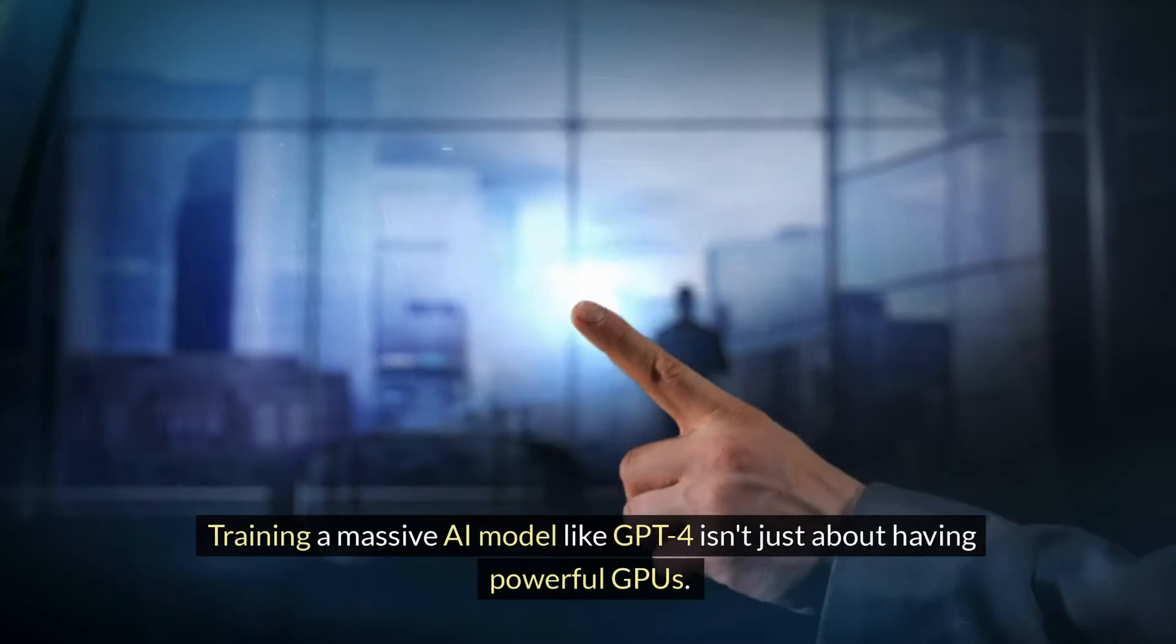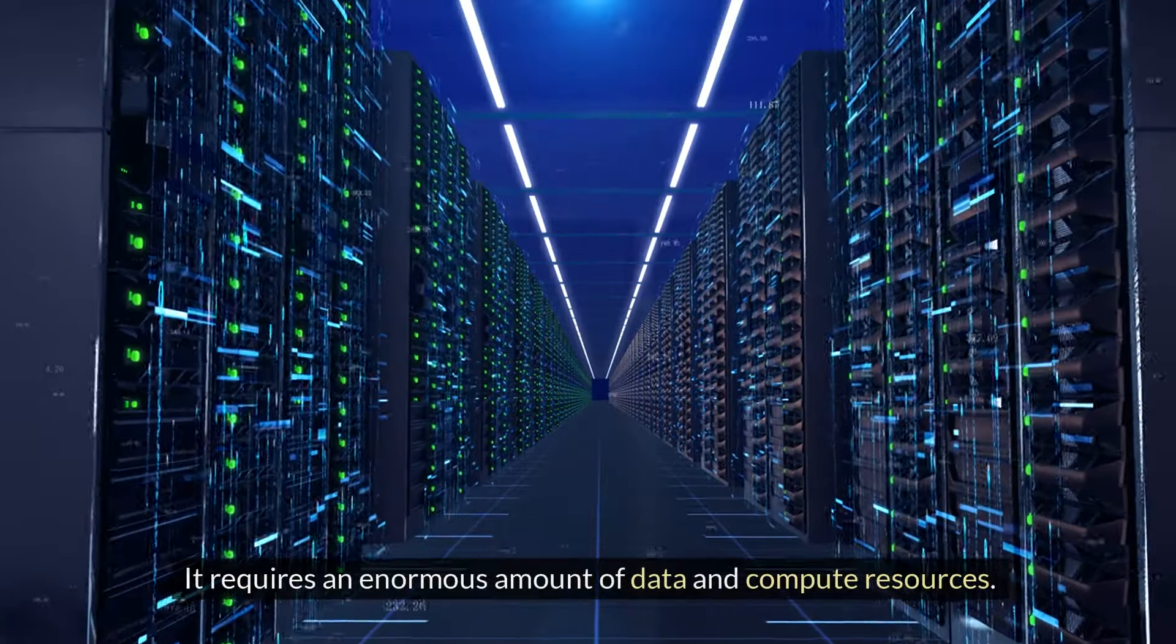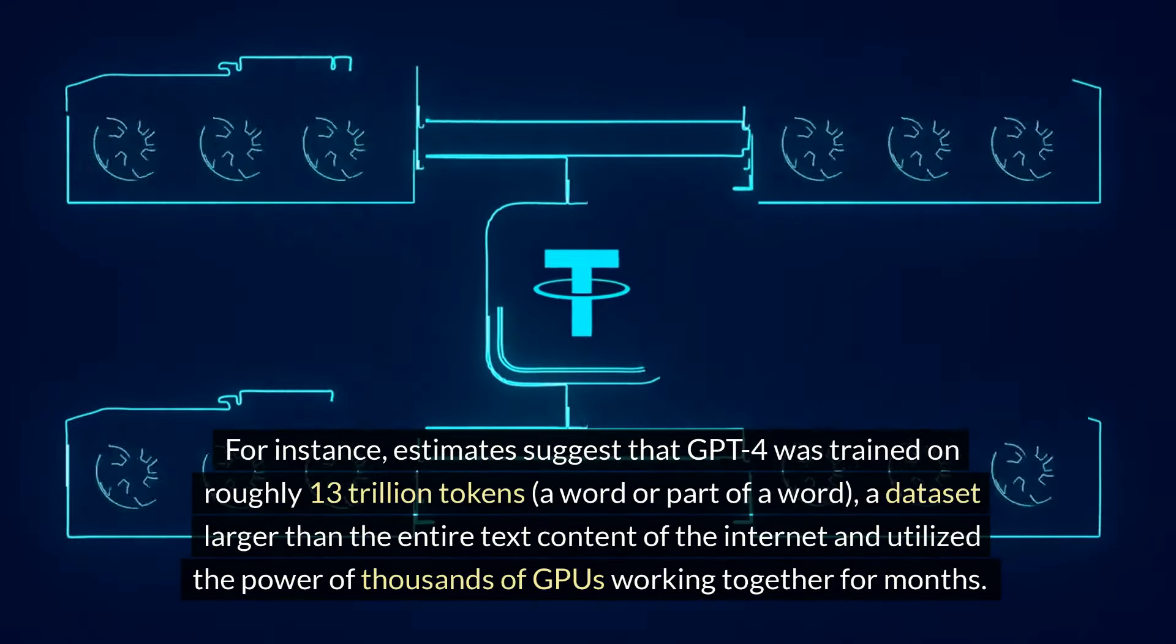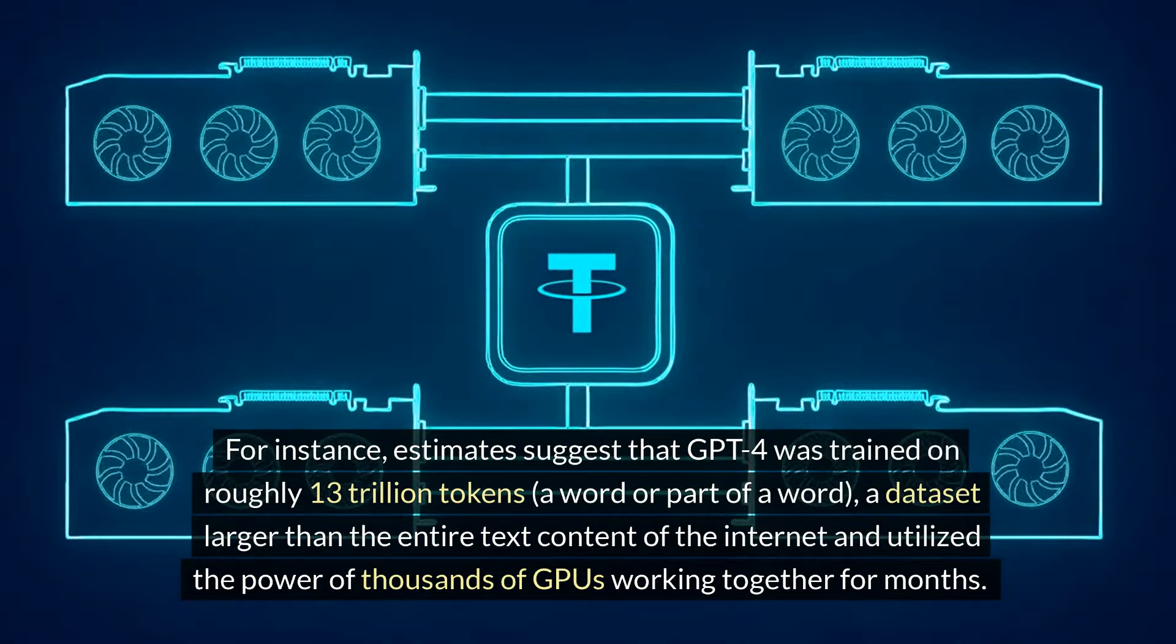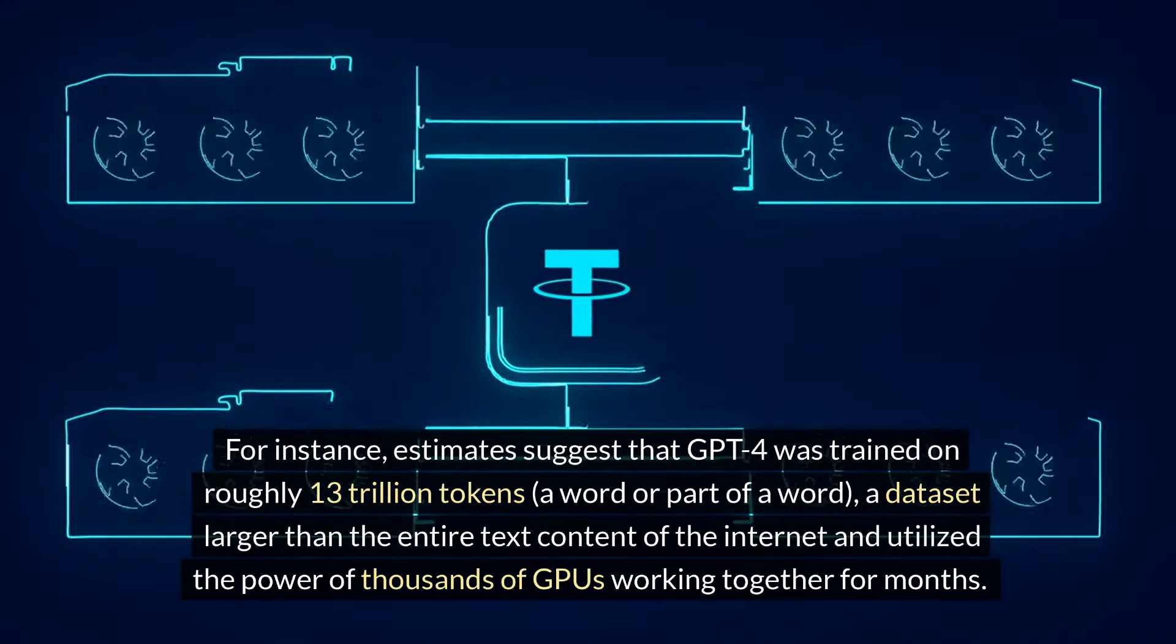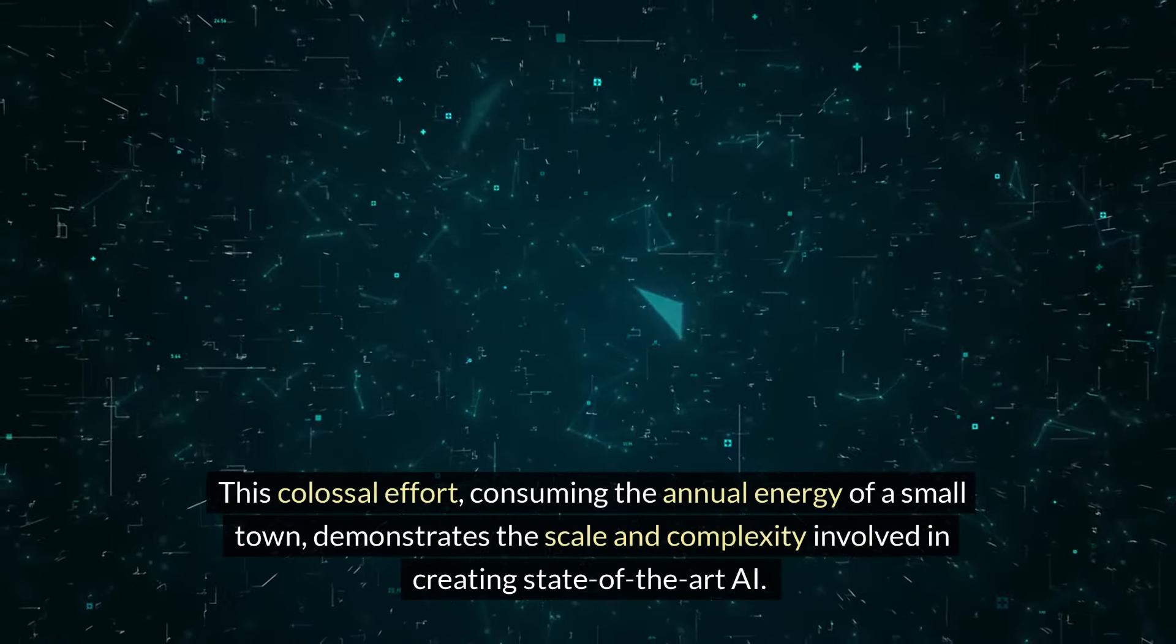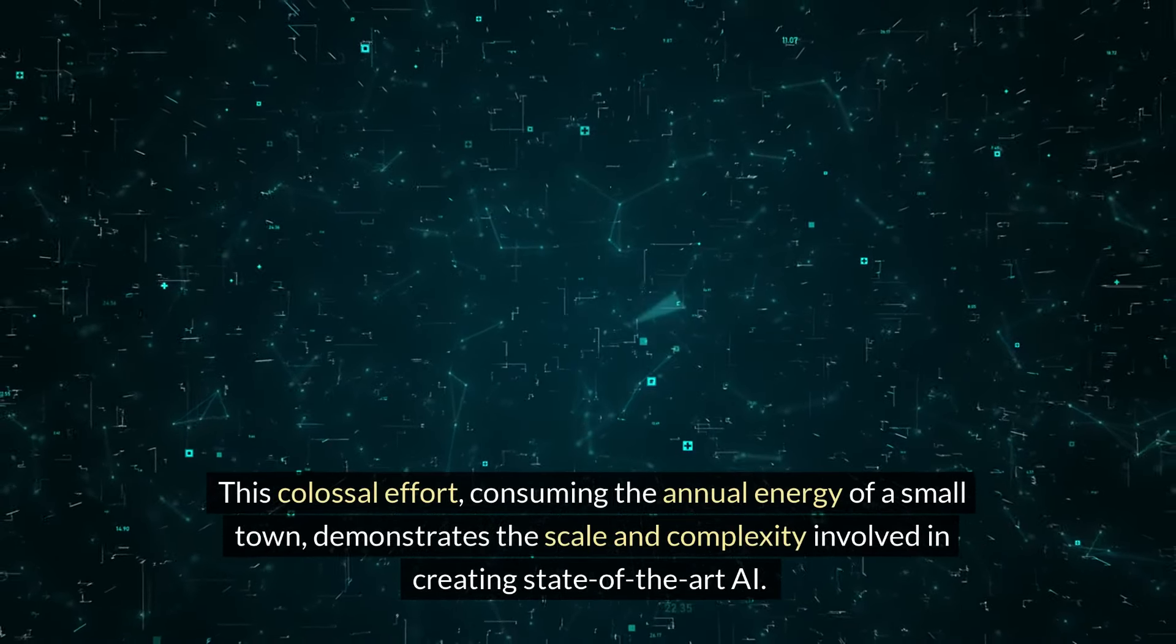Training a massive AI model like GPT-4 isn't just about having powerful GPUs. It requires an enormous amount of data and compute resources. For instance, estimates suggest that GPT-4 was trained on roughly 13 trillion tokens—a word or part of a word—a dataset larger than the entire text content of the Internet, and utilized the power of thousands of GPUs working together for months. This colossal effort, consuming the annual energy of a small town, demonstrates the scale and complexity involved in creating state-of-the-art AI.